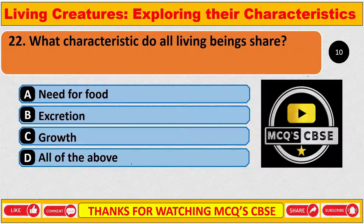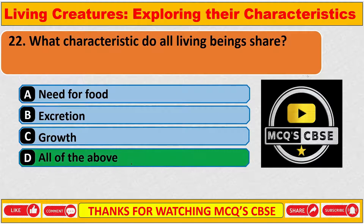What characteristic do all living beings share? The correct answer is D — all of the above: need for food, excretion, and growth.